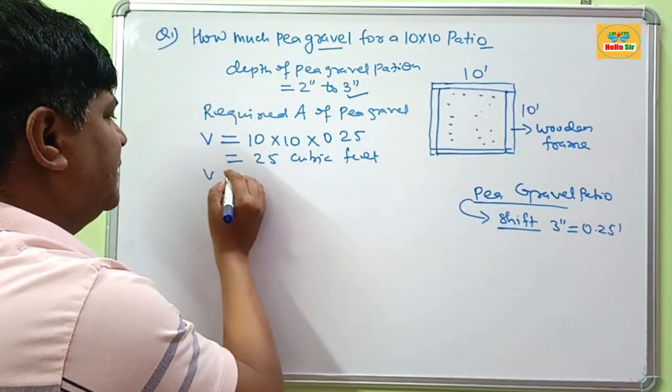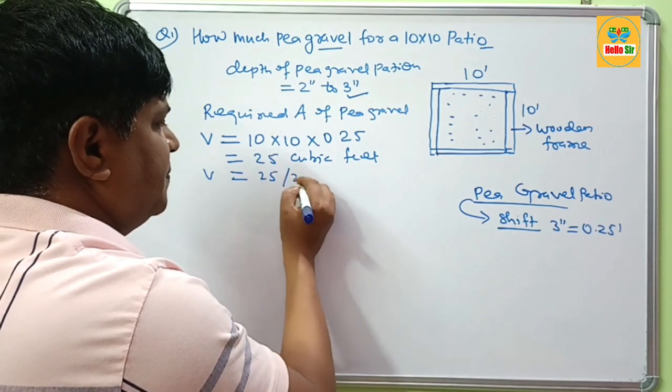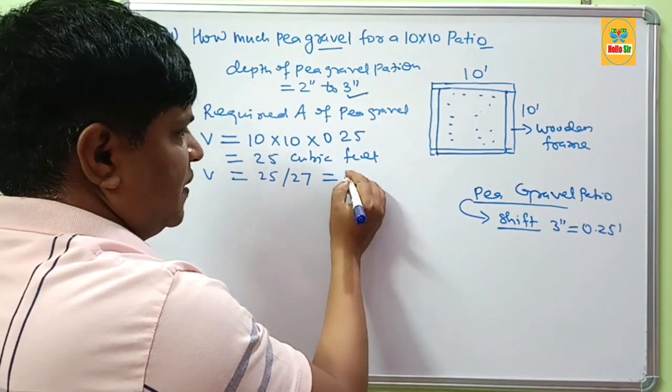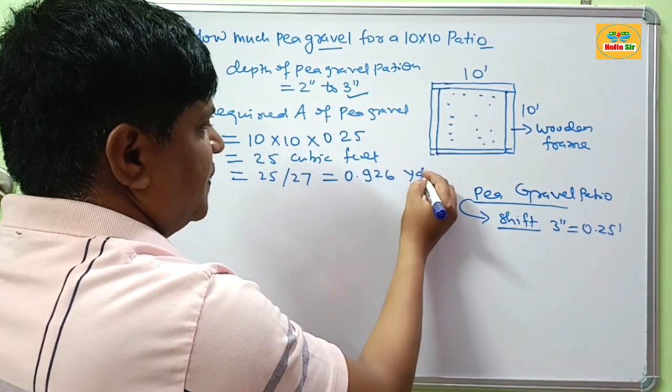And if you want to measure this quantity in cubic yards, then 25 is divided by 27. This will count about 0.926 cubic yards.